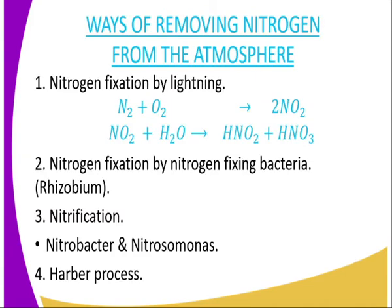Ways through which nitrogen is removed from the atmosphere: the first is nitrogen fixation by lightning, where nitrogen gas combines with oxygen in the presence of lightning. The energy for fixing the two comes from lightning to form nitrogen dioxide, which then combines with rain to form two acids — nitric acid (HNO₃) and nitrous acid (HNO₂) — which is what we refer to as acidic rain. The second is nitrogen fixation by nitrogen-fixing bacteria, Rhizobium. Then we have nitrification, involving the bacteria Nitrobacter and Nitrosomonas. Finally, through the process of producing ammonia, nitrogen is removed from the atmosphere.